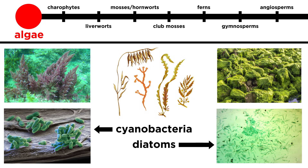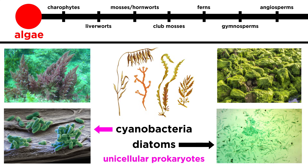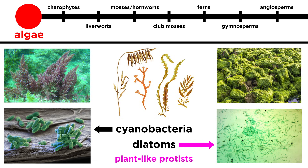Many organisms that are sometimes referred to as algae, like cyanobacteria and diatoms, don't really resemble the things we normally think of as plants. In fact, cyanobacteria don't qualify as plants at all, because they're unicellular prokaryotes, where plants are multicellular eukaryotes. Similarly, diatoms, like other protists, although they are eukaryotic, are also unicellular, and therefore lack the structure we normally associate with plants. So they're classified totally separately and referred to as plant-like protists.